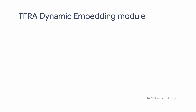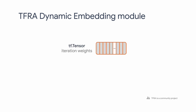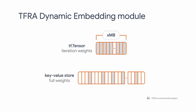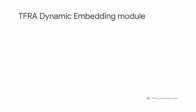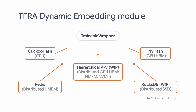At a high level, TFRA dynamic embedding expresses sparse weights, which is very common in recommendation models, in two layers with an efficient key-value store under the hood. This enables you to train large and dynamically changing embedding tables. The key-value store has different implementations, for example CuckooHash, Redis, and RocksDB, and the community is working to add even more options. You should definitely experiment and pick the one that suits your needs.